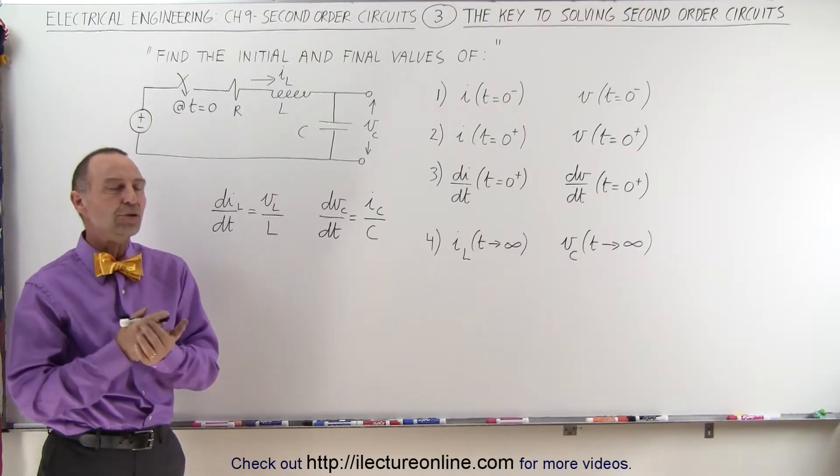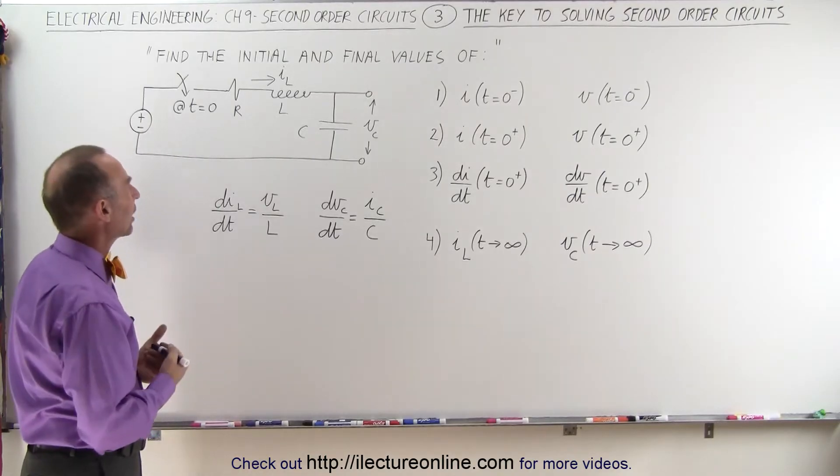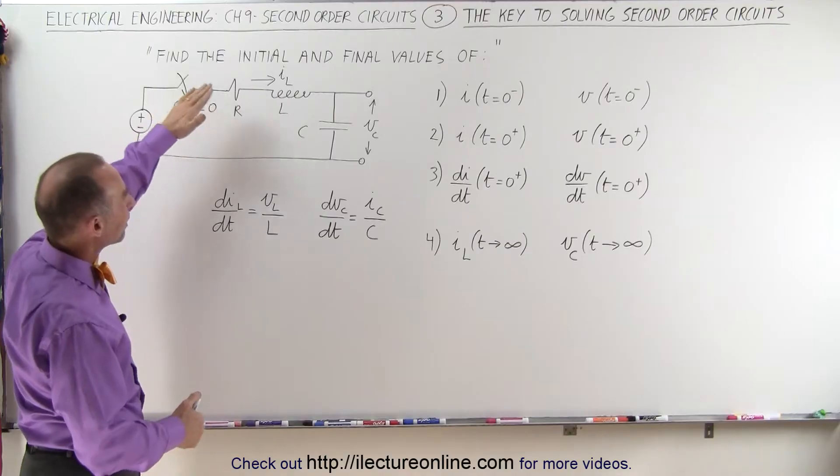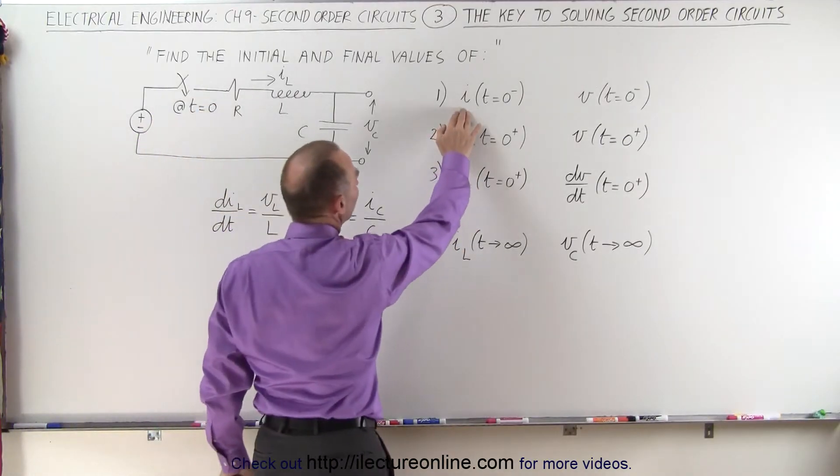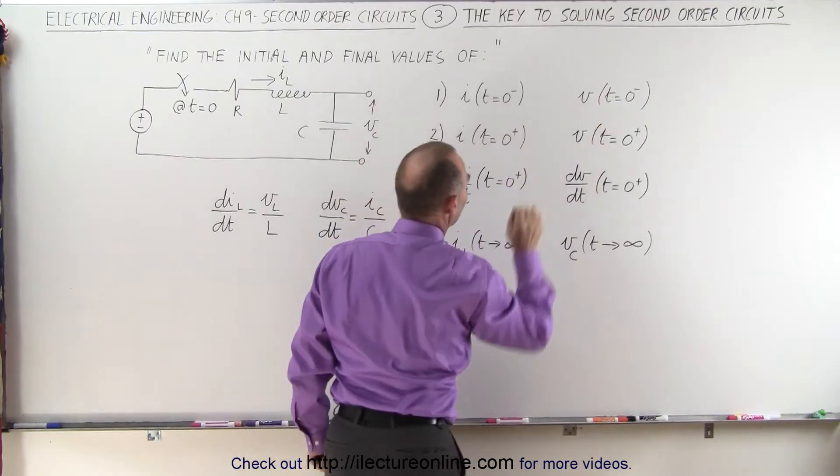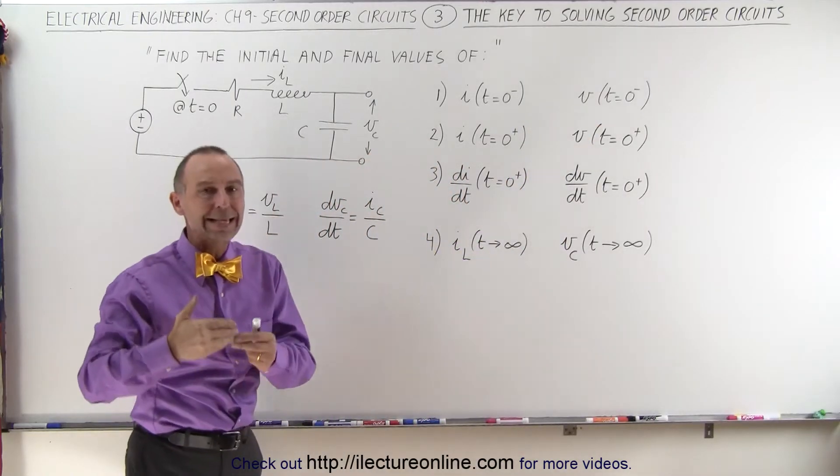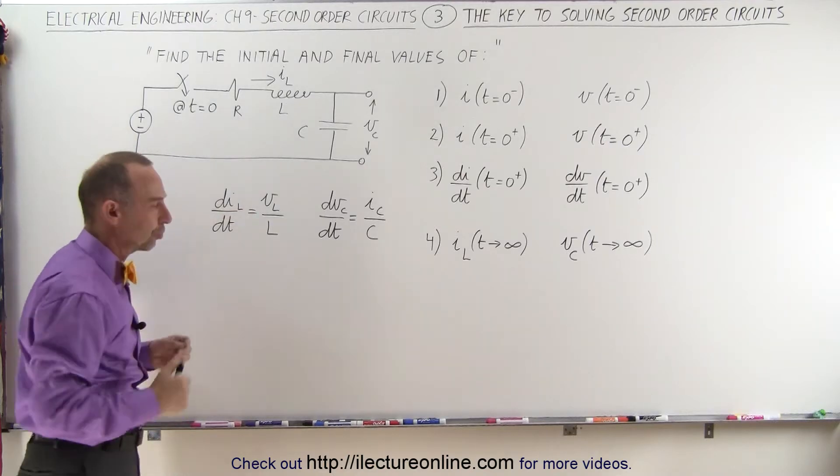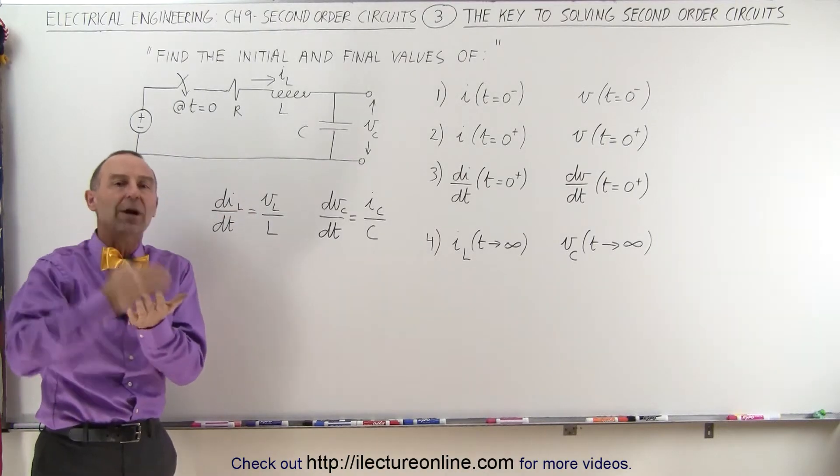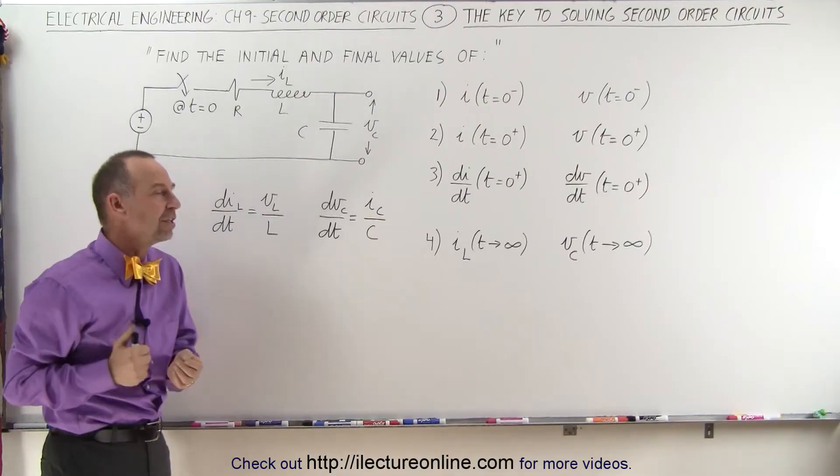So what we're always trying to do is the following four things. We want to find the initial and final values of the current through the inductor and the voltage across the capacitor before the switch is closed or opened, or a source is turned on. What were the conditions prior to the event that starts at t equals zero?